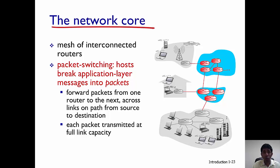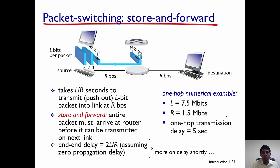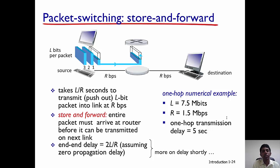The source is the server of google.com trying to send you the web page, and the destination is your client which had requested it. The routers in the internet help move these packets from the server to you. Each of these packets is transmitted at the full capacity of the links connecting the intermediate routers. In a packet switched model, the entire message is divided into smaller packets and each packet is carried from source to destination. The intermediate routers store each packet and then forward it to the next router, and this process continues until the packet reaches the host which had requested the message.